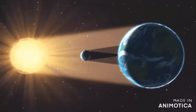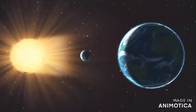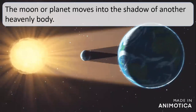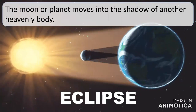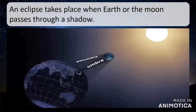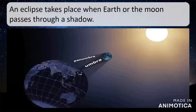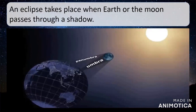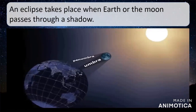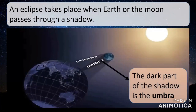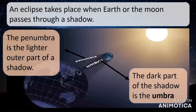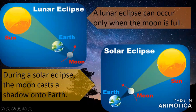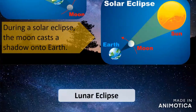There are also phenomena in which the moon, earth, and sun are aligned with each other — that is what we call an eclipse. An eclipse is when the moon or planet moves into the shadow of another heavenly body, or when earth or the moon passes through a shadow. These shadows are called penumbra and umbra — umbra is the dark part of the shadow and penumbra is the lighter, outer part.